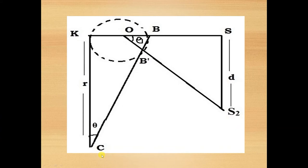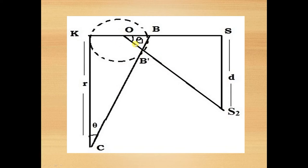Say angle C is theta. Then in triangle KBC, this angle is theta and angle K is 90 degrees, so naturally angle B is 90 minus theta. Continuing this, we consider another triangle O, B, B-dash — the angle is 90 degrees because this is the tangent to the circle, and the angle between the tangent and normal is always 90 degrees. So we have 90 degrees here and 90 minus theta here, thereby we prove that angle O is theta.